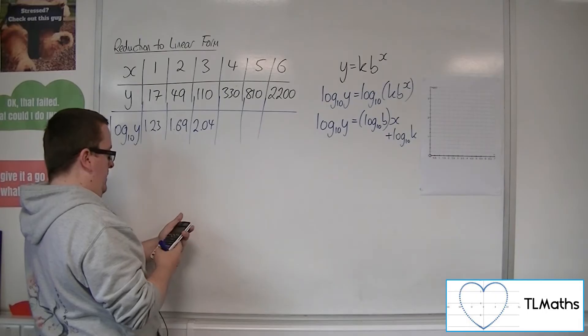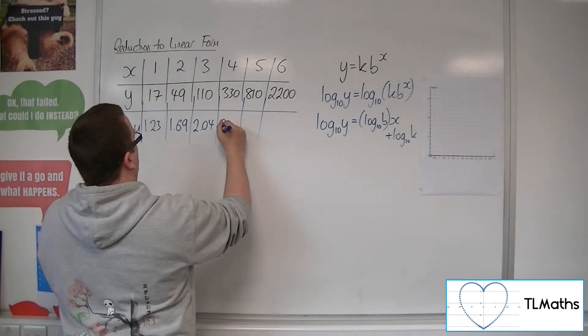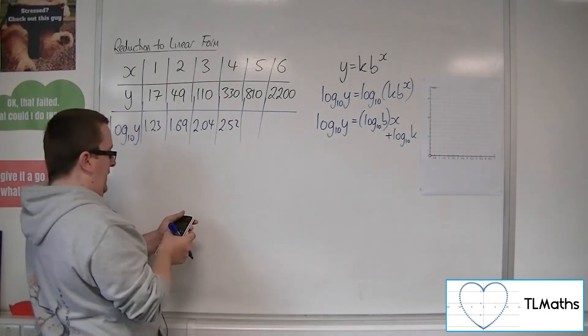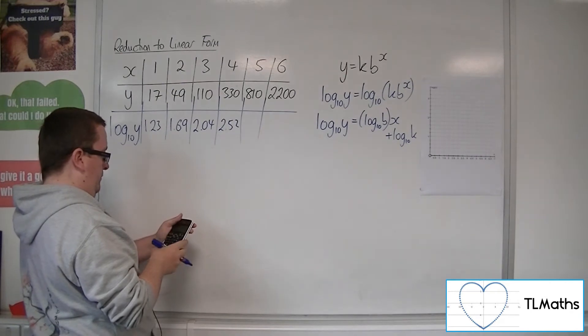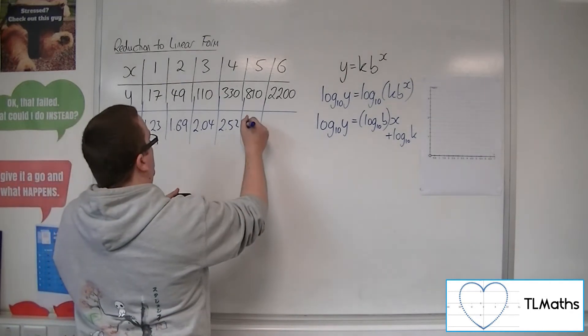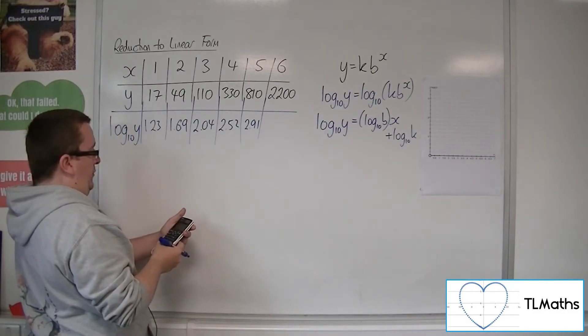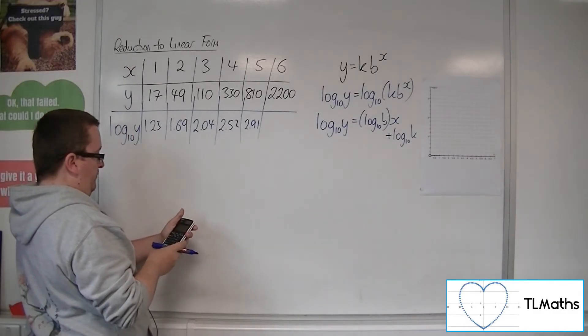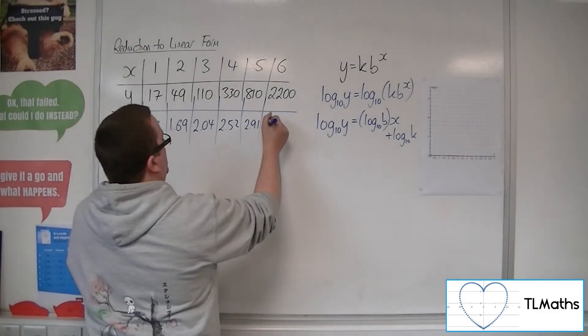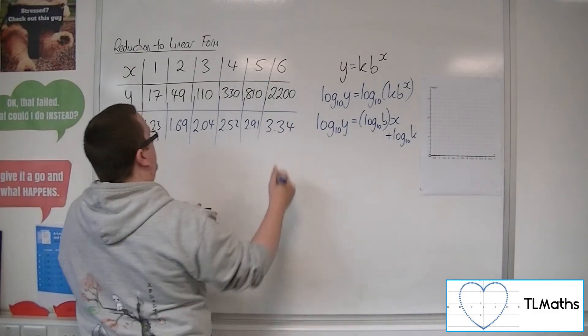330 is 2.52. 810 is 2.91. And 2,200 is 3.34.